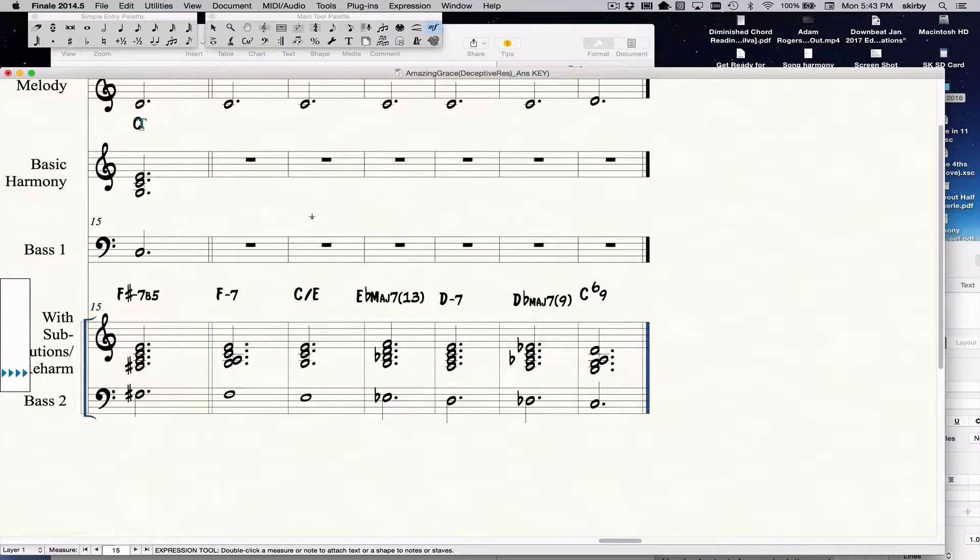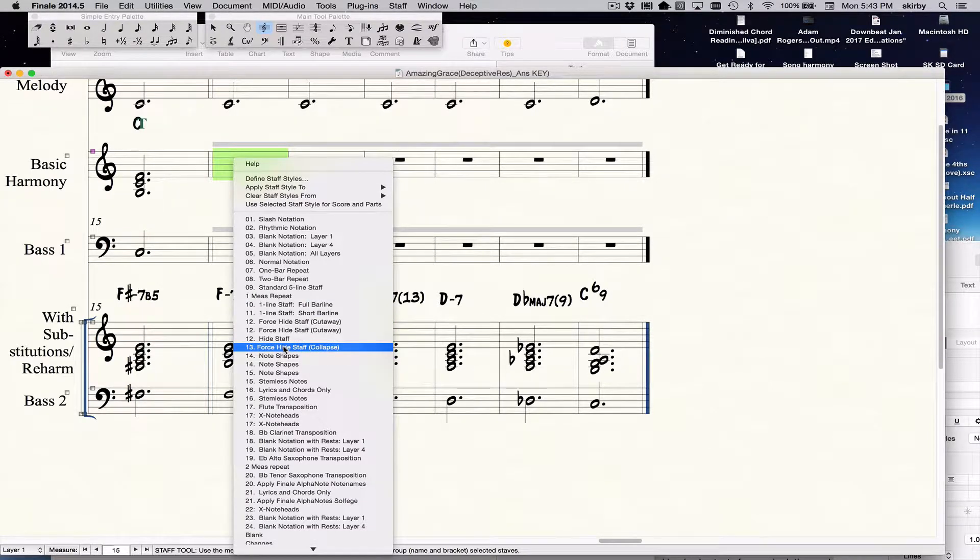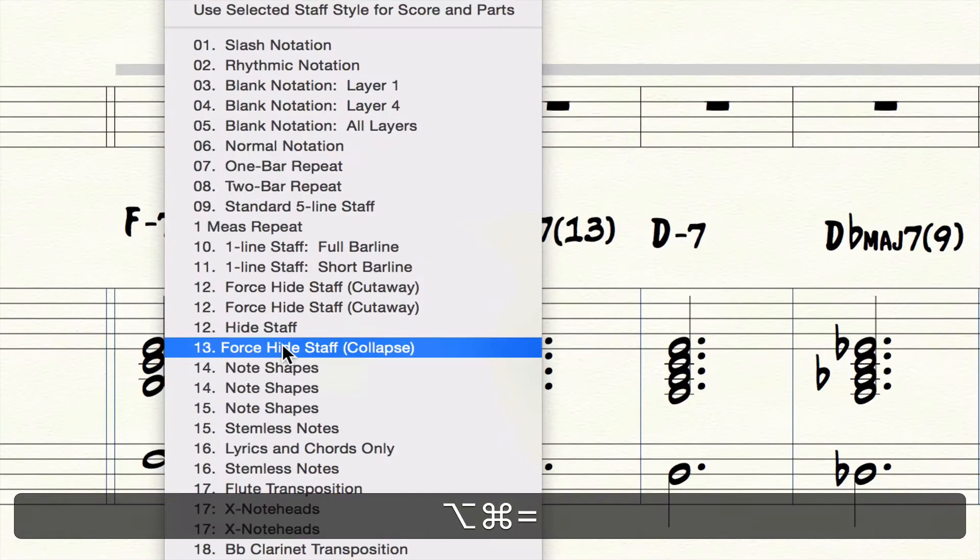But I've hidden them with a staff style and the way that works is you use the staff tool which was triggered there, is accessed there. See this line appears and that means that a staff style is currently applied to those staves and the staff style that is applied is this one: force hide staff and collapse.